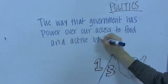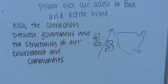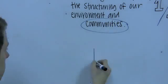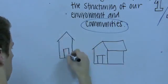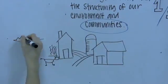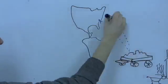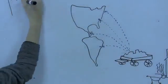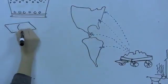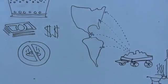Politics. The way that government has power over our access to food and active living, and the connection between government and the structuring of our environments and communities. After the Neolithic Revolution, more complex social systems were brought around agricultural communities. These systems developed patterns of trade that brought them into contact with different cultures, sparking colonization and expansion, which in some cases led to extreme corruption that negatively impacted citizens' access to food and resources.